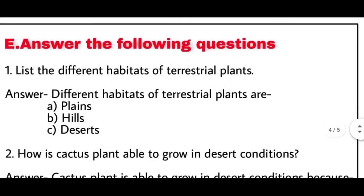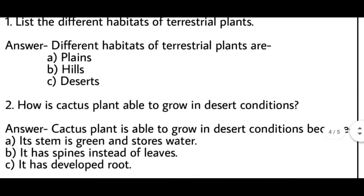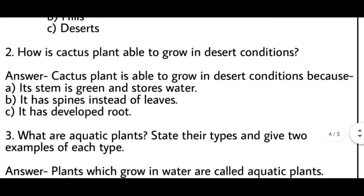Now the long answer question: list the different habitats of terrestrial plants. Terrestrial plants ke alag-alag habitats batane hain. The answer is: different habitats of terrestrial plants are plains, hills and deserts.